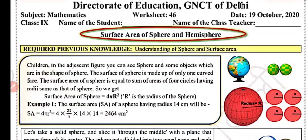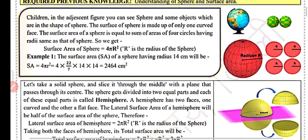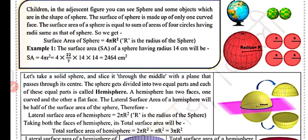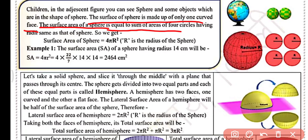The required previous knowledge is understanding of sphere and surface area. In the adjacent figure, you can see a sphere and some objects which are in the shape of a sphere. The surface of a sphere is made up of only one curved face. The surface area of sphere equals the sum of the area of four circles having the same radius, giving us the formula: surface area of sphere = 4πr², where r is the radius of sphere.